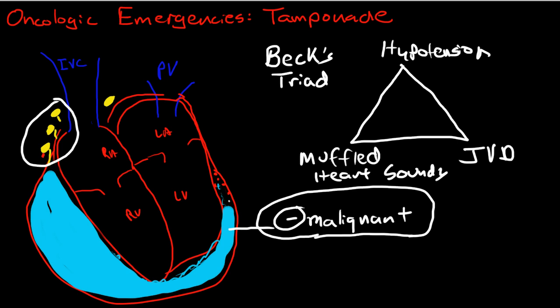Hypotension is due to a dramatic decrease in cardiac output from the left ventricle. Jugular venous distension is due to compression of the right atrium and right ventricle, which is disrupting blood return back to the heart from the inferior vena cava. And muffled heart sounds is due to the large amount of fluid surrounding the heart, making it difficult to hear heart sounds.